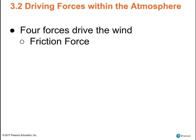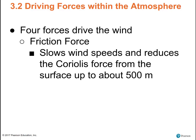Friction is the last force. Friction slows down wind speed and reduces Coriolis deflection from the surface up to about 500 meters.